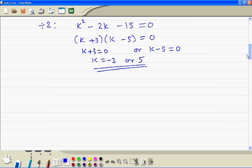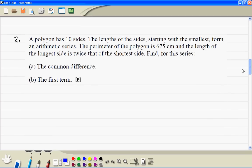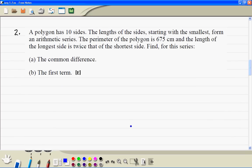Let's do another question. The polygon has 10 sides. So therefore n is equal to 10. And the sum of all the sides is equal to 675.